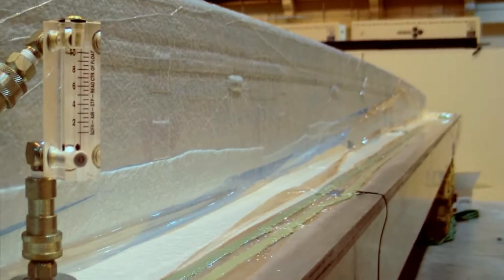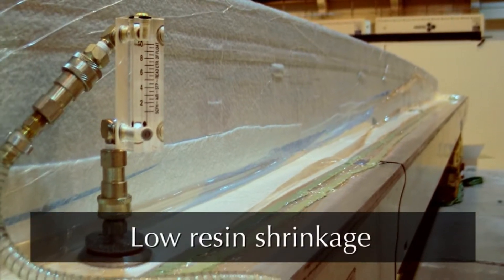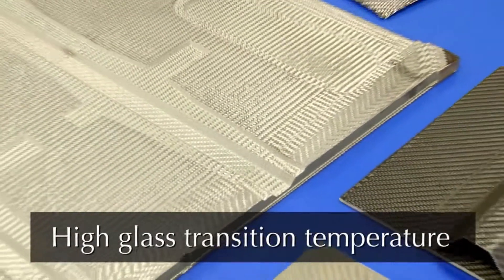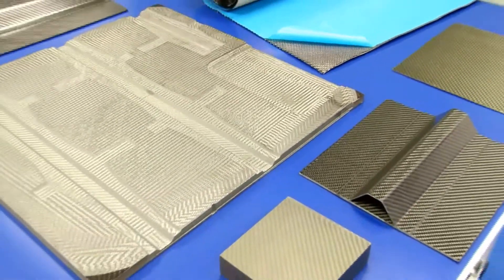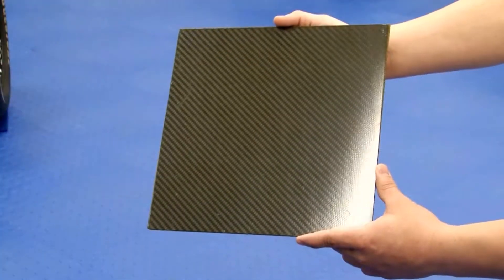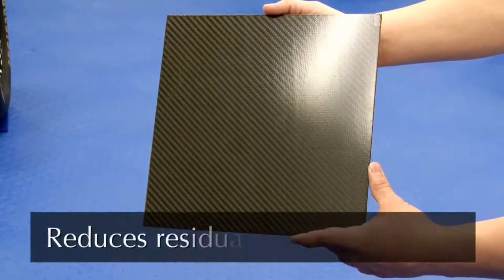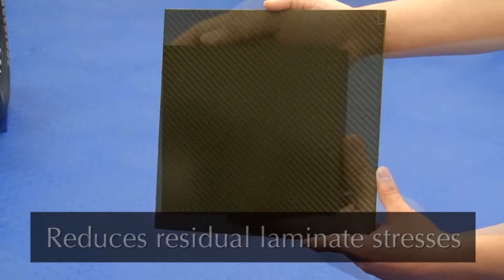It has exceptional low resin shrinkage during cure and develops a very high glass transition temperature. It will improve tool surface quality and reduce the need for part finishing. Low shrinkage also reduces residual laminate stresses.